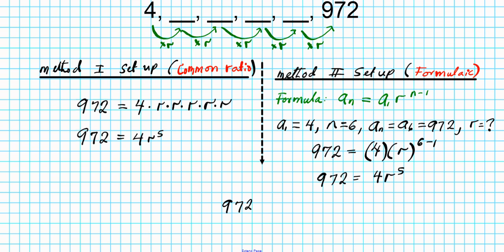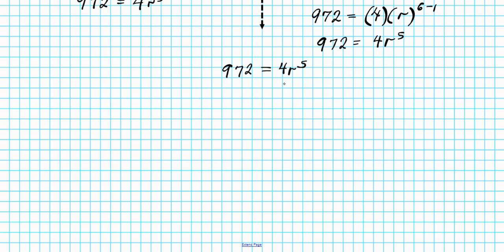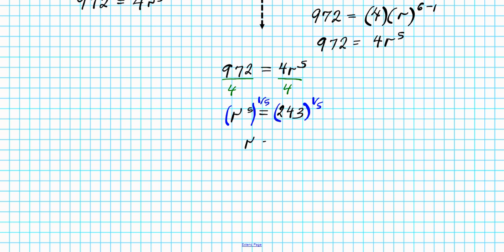We have 972 equals 4 times R to the fifth. To isolate R, we start by dividing both sides by 4 — working backwards through the order of operations. That gives us R to the fifth power equals 243. The inverse of the fifth power is the fifth root, so we take the one-fifth power of both sides, giving R equals the fifth root of 243, which is 3.